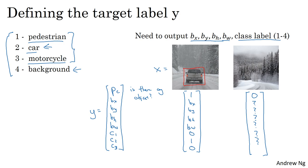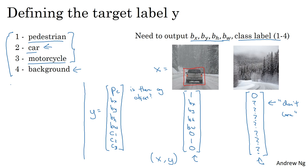If there is no object in the image, you don't care what bounding box the neural network outputs, or which of the three objects C1, C2, C3 it thinks it is. Given a set of labeled training examples, this is how you construct X (the input image) and Y (the class label), both for images where there is an object and for images where there is no object. A set of these will define your training set.